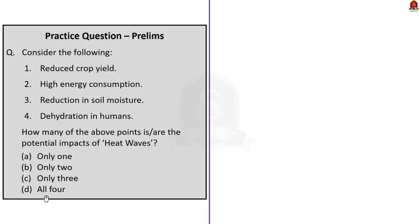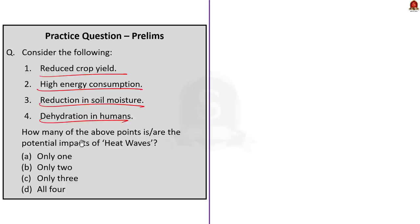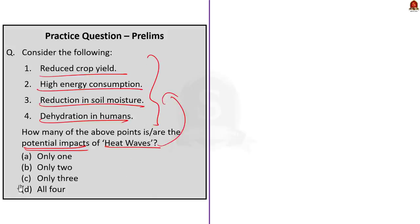Question number 3: Consider the following — reduced crop yield, high energy consumption, reduction in soil moisture, dehydration in humans. How many of the above points are potential impacts of heat waves? All the points are potential impacts of heat waves. So the correct answer is option D, all four.